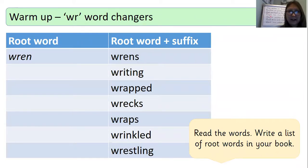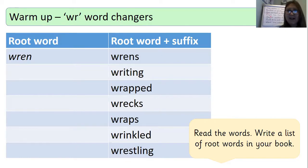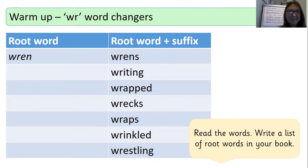For our warm-up today, we have got a game of word changes. You can see here I've got a table. One side says root word, the other side says root word and suffix. Your job is to write a list of the root words. I've given you an example on the first line — 'wrens' was the root word with the suffix, wren and s. Your job is to take the suffix off and just write the root word. Have a read of the list of root words and suffixes, then write your list of root words in your book. Make sure you check your spelling carefully. Put me on pause now so you can write your list of root words.